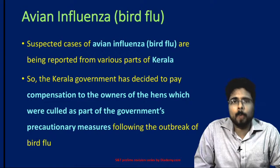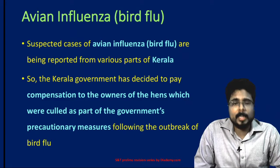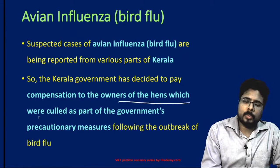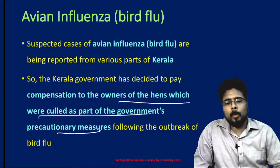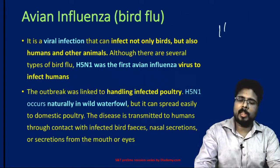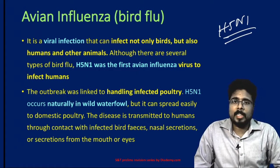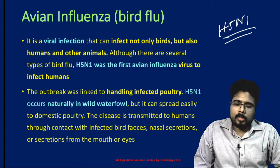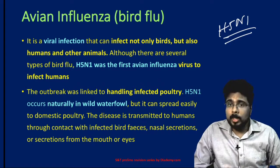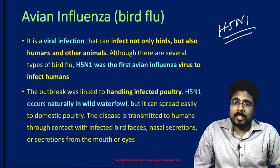Next, avian influenza or bird flu. Suspected cases of avian influenza are being reported from various parts of Kerala. The government has paid compensation to owners of hens that were culled as a precautionary measure to stop the spread of bird flu. This bird flu is caused by the H5N1 virus, which occurs naturally in wild waterfowl but can spread easily to domestic poultry and from them to humans.